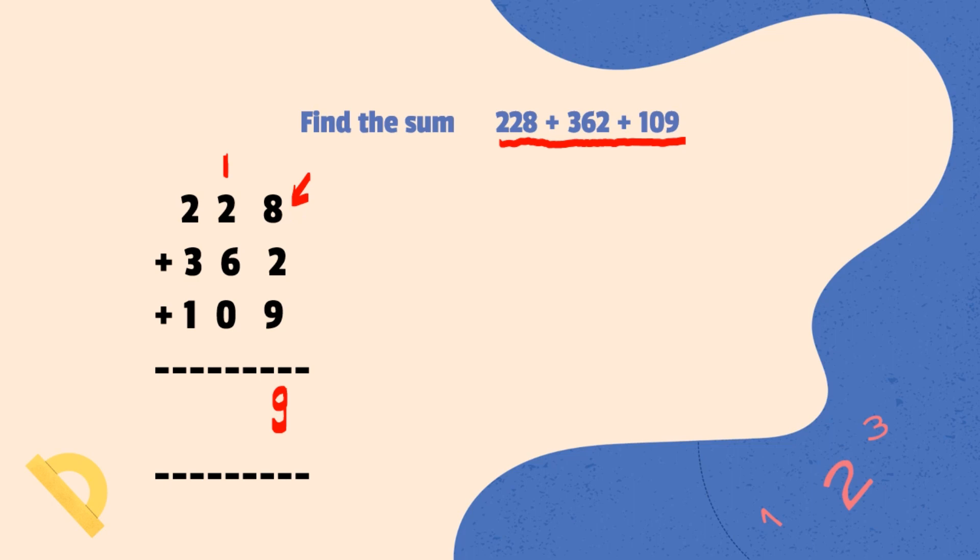Then, we will add 1, 2, 6 at tens place. This will give 9. Then, we will add 2, 3, 1 at hundreds place which will give 6. So, our result will be 699.